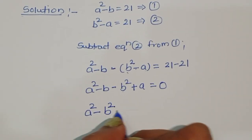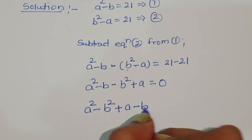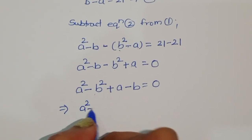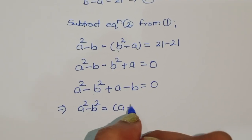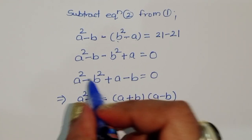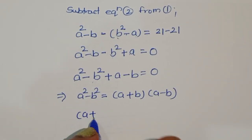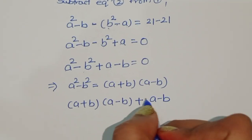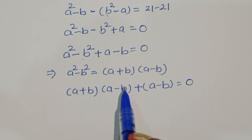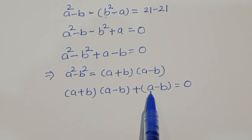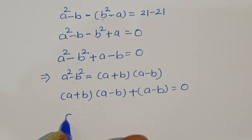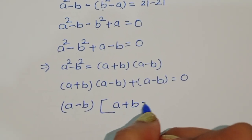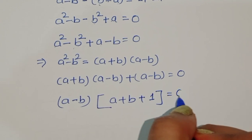We can rewrite this as a² - b² + a - b = 0. We know the formula a² - b² = (a + b)(a - b). Applying this formula, we get (a + b)(a - b) + (a - b) = 0. We can take (a - b) as a common factor, giving us (a - b)(a + b + 1) = 0.